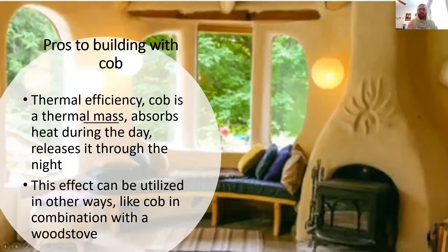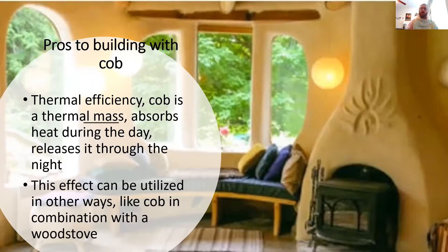Probably the biggest benefit that most people who know about cob are aware of is its thermal mass ability. Cob is a great thermal mass — it will take in heat and then slowly release it over time. Most of the heat source is the sun, but cob can be utilized with other heat sources as well. One neat thing I found in a lot of cob homes are cob rocket stoves, where people make a bench out of cob running along one of their walls and run part of the exhaust from the fireplace through it, designed to take in heat from the exhaust and release it slowly back into the building.